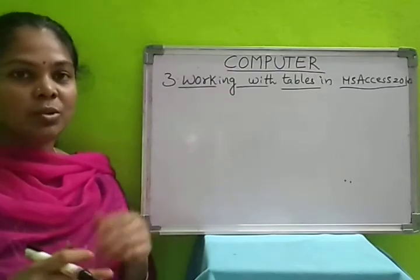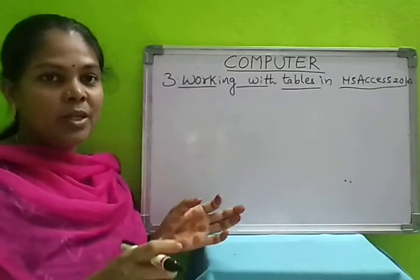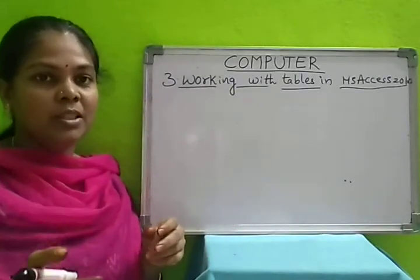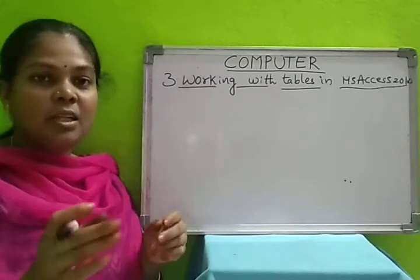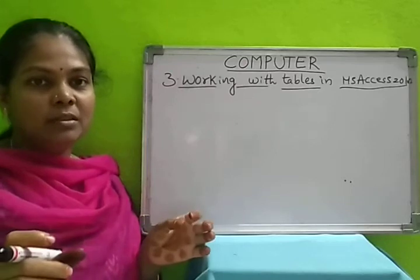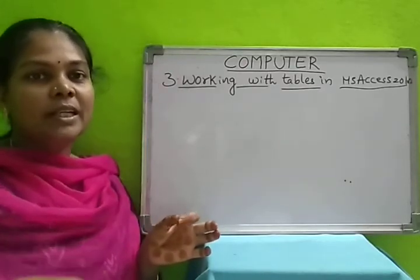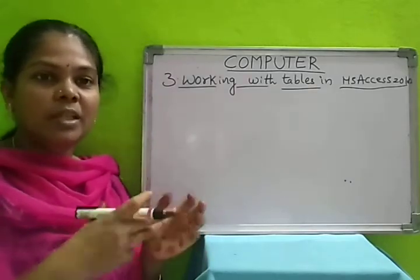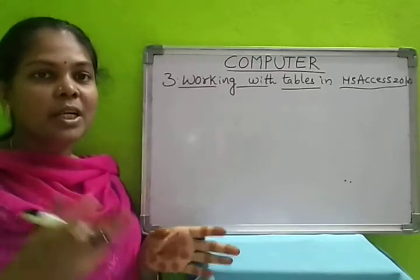Suppose, as an example, there is a student table. We will write student name, student number, and their address, phone number, or subject names. What marks they got — like that we will enter row-wise. Column-wise, we will give those column names and enter the records according to each student. Their details will be stored in a table, in rows and columns.